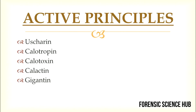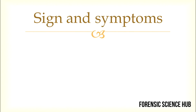Now, talking about the active principles, there are five main active principles: Ushkarin, Calotropin, Calotoxin, Calactin, and Gigantin. This is an important question that can be asked in medical exams — you need to remember which active principles belong to this plant.